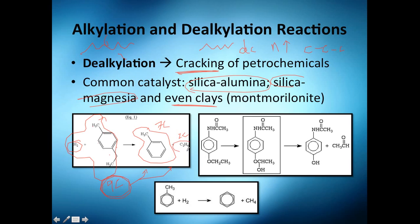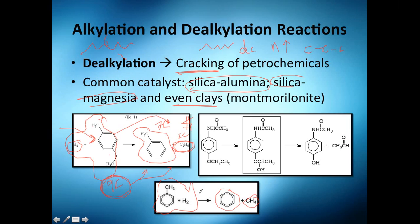So from a molecule with nine carbons you get one with seven carbons and another with two carbons. The two-carbon product may not be economically convenient at that moment, so you'd rather crack it further into cheaper but in-demand compounds. Another example: toluene plus hydrogen gives you benzene plus methane.